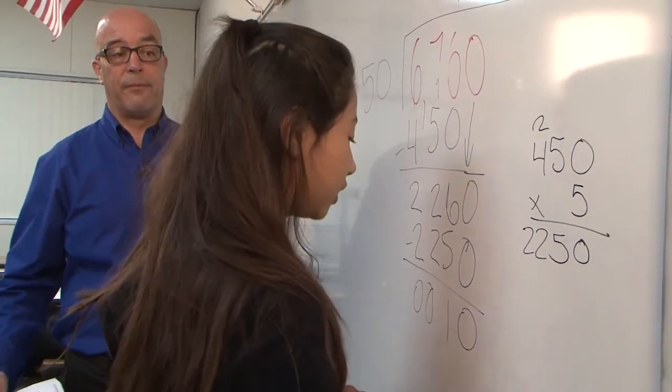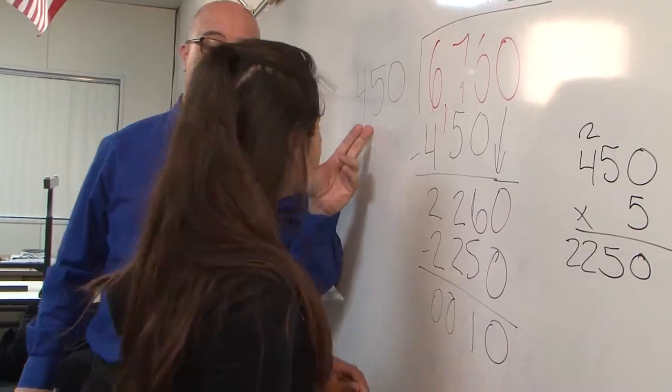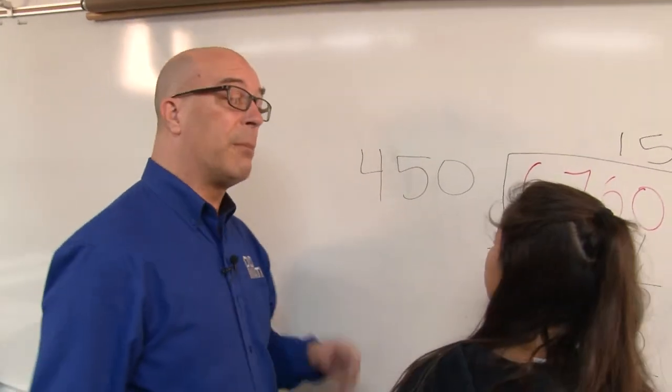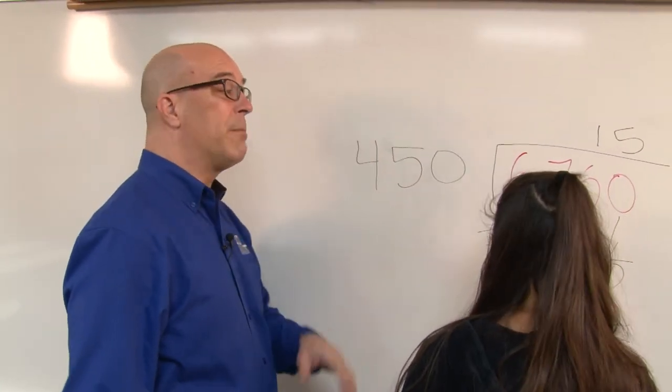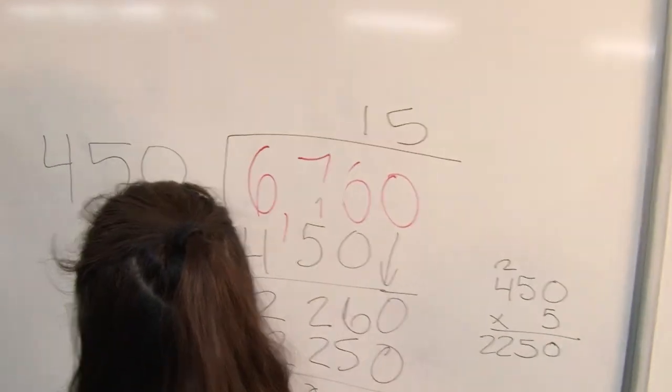That's it. So what are you left with? Ten. Ten. Now if you read a book every 450 miles and you only have 10 miles left to go, are you going to be able to read another book? No. So how many books were you able to read? Fifteen. There you go, Samantha. Nice and easy.